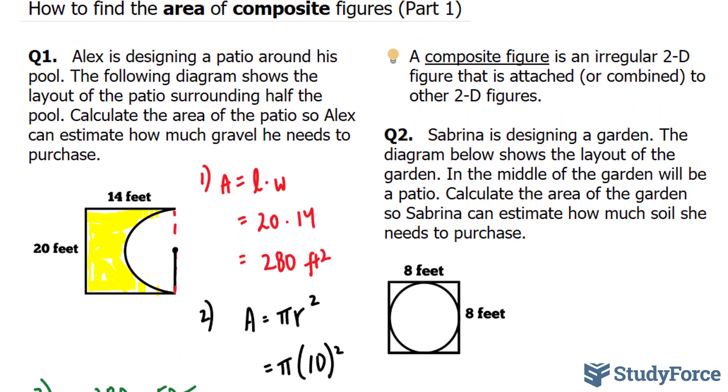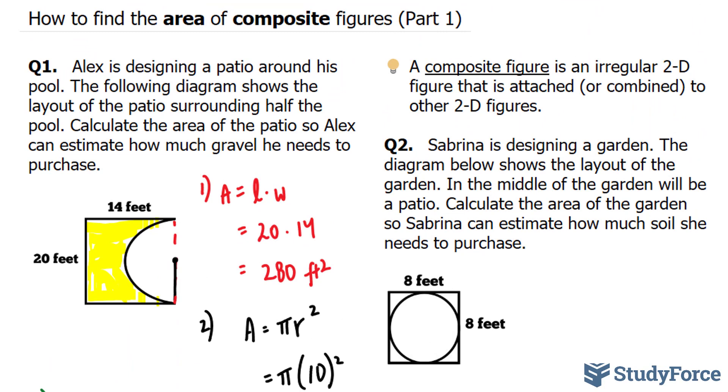Let's concentrate now on question 2. Sabrina is designing a garden. The diagram below shows the layout of the garden. In the middle of the garden will be a patio. Calculate the area of the garden so Sabrina can estimate how much soil she'll need to purchase. So this part right here, what is highlighted in green, is what we're looking for.